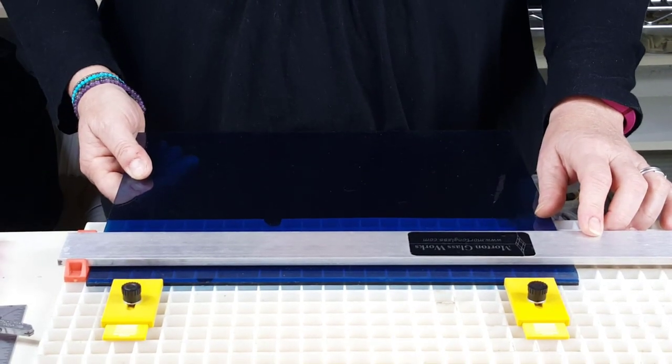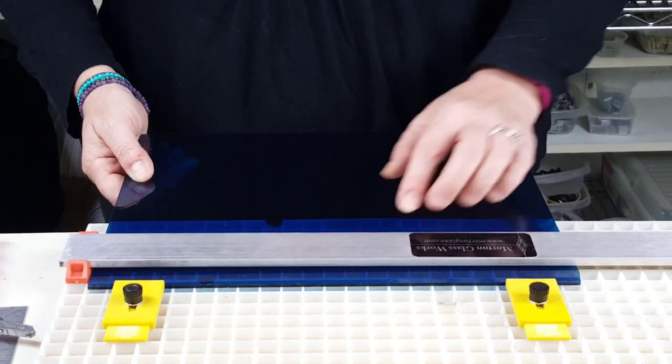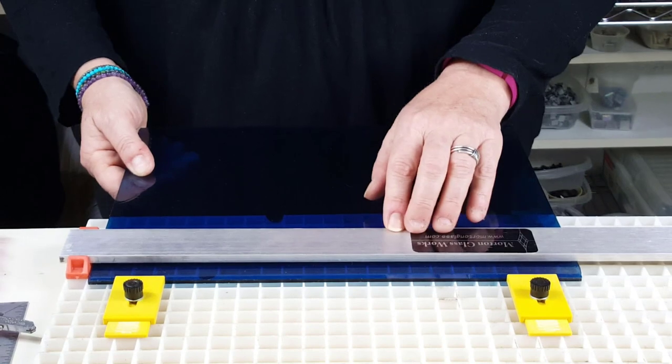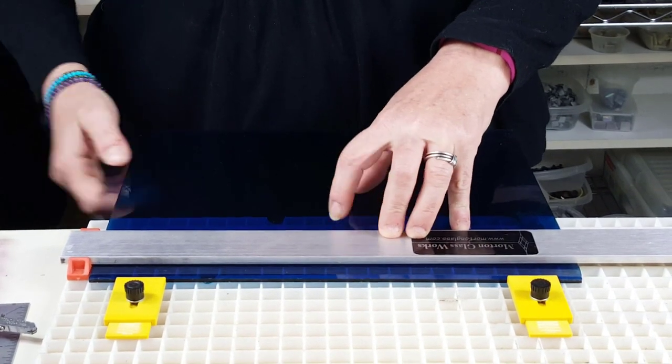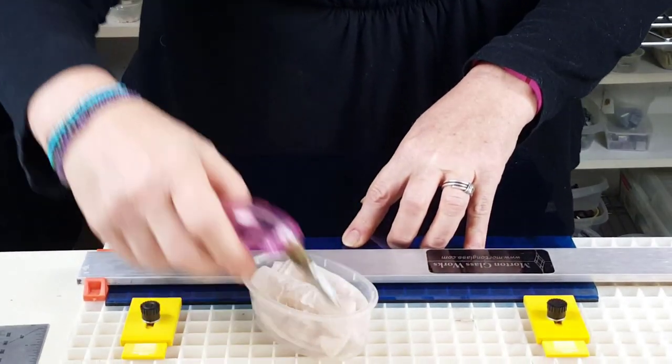I'm going to show you how to cut sheet glass using the Morton Glasswork system. What I've done is I've set this up where these are at a three-quarter inch strip, and what I'm going to do is I'm going to take an oiled glass cutter. I'm going to dip it in my oil.